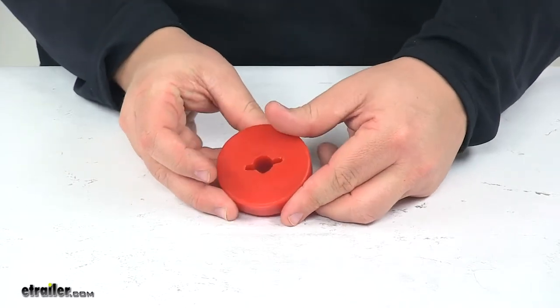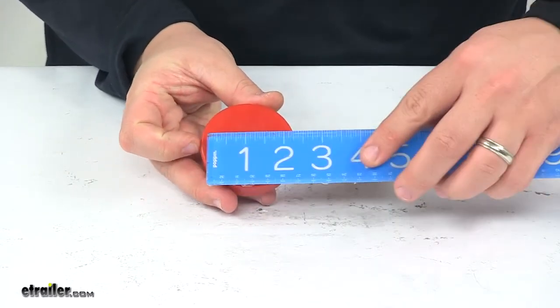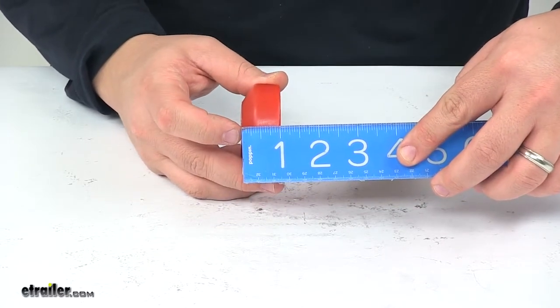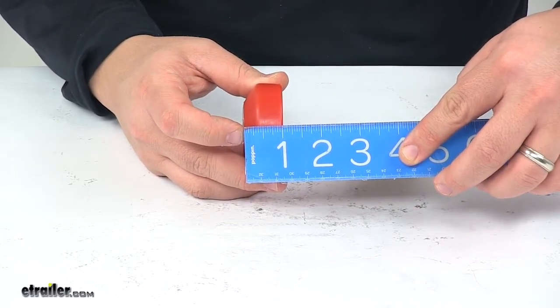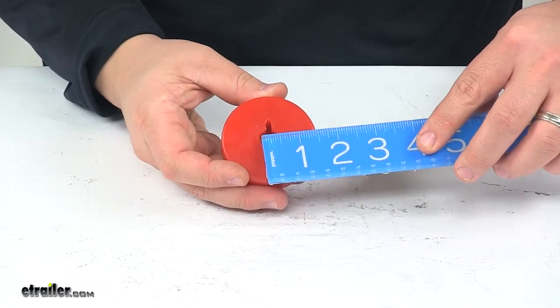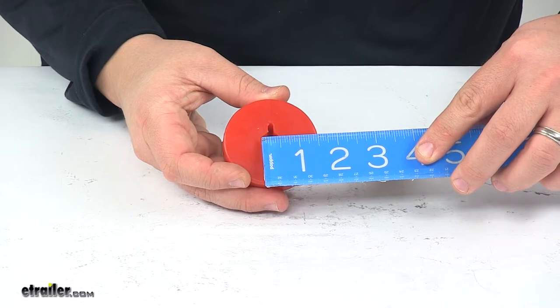Taking a look at the dimensions real quick, starting with the diameter. Overall diameter, edge to edge is two and a half inches. The thickness is right at one inch and then that center hole right there has a diameter of a half inch.